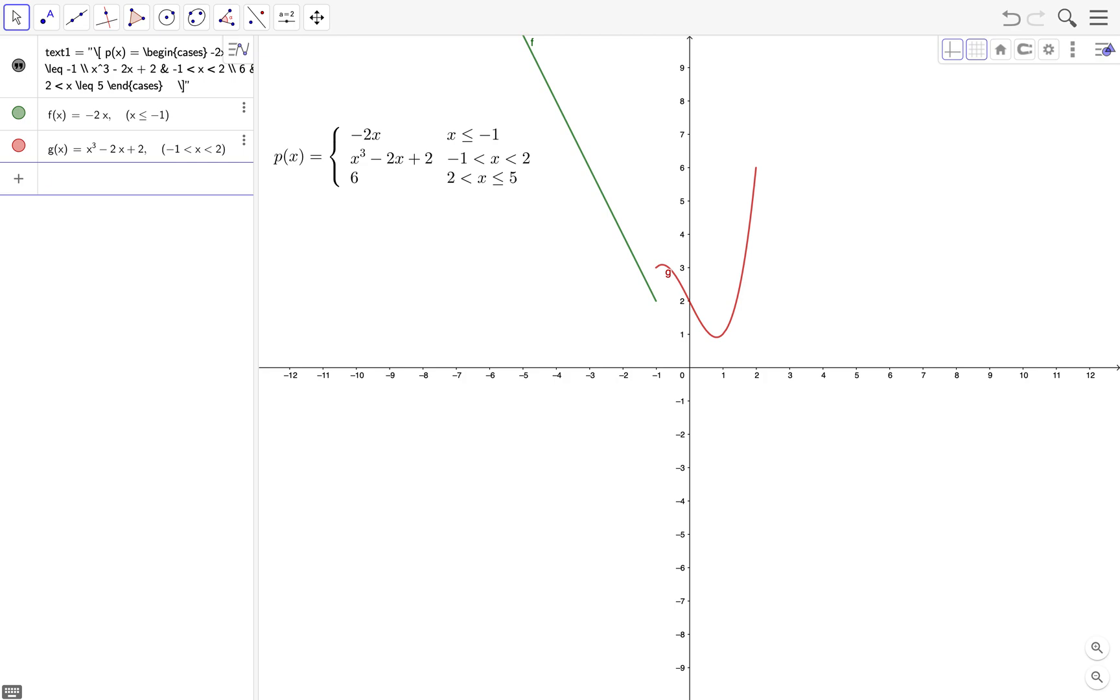And for the last function we have h of x is equal to 6, and then the domain is between 2 and 5. So x is less than or equal to 5 but x is greater than 2. So we just press enter.